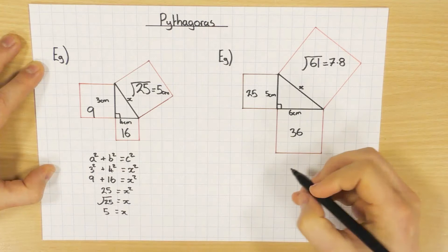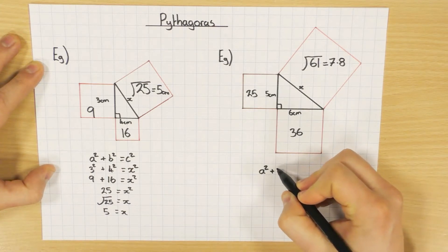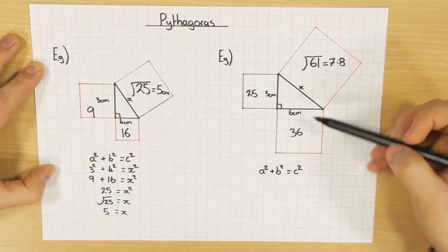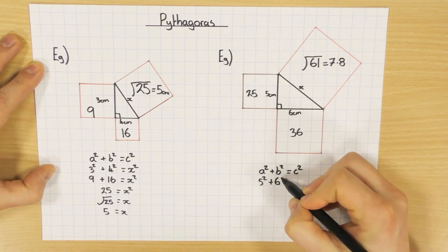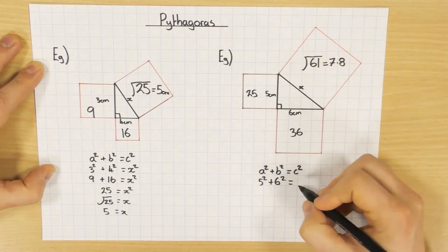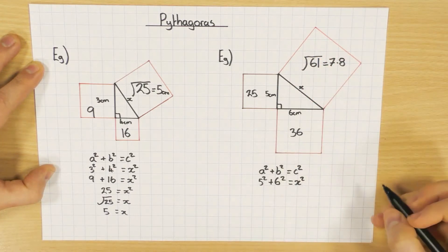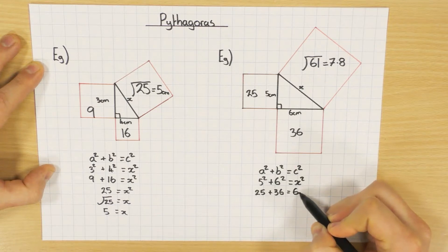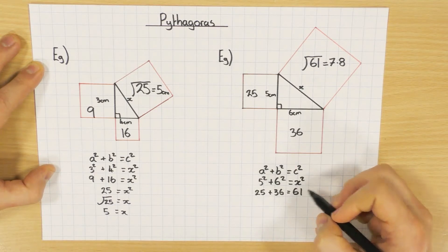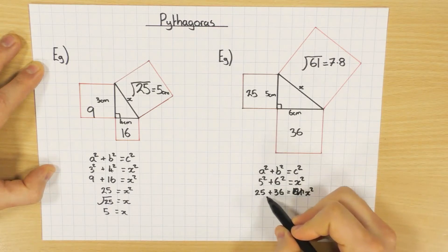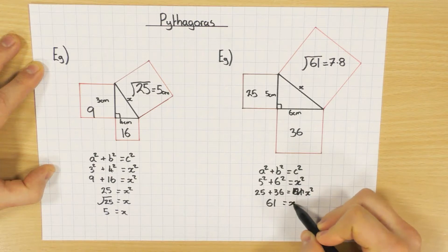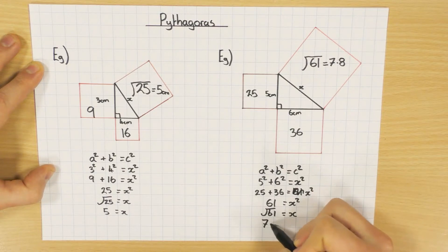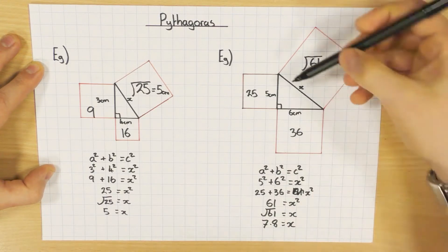If I do it the other way using the formula a squared plus b squared equals c squared, substituting the smaller lengths — 5 and 6 — so 5 squared plus 6 squared equals x squared. Fill it all in: 25 plus 36, which equals x squared, so that's 61 equals x squared. Then we square root 61 to get x, which gives us 7.8 — the value of x, which is the value of that side. Two different ways, finding the longest length.